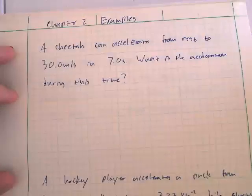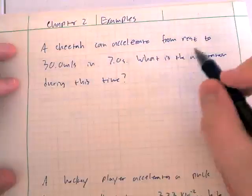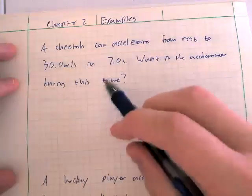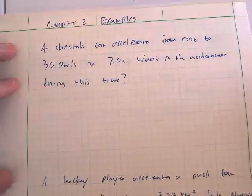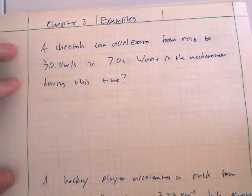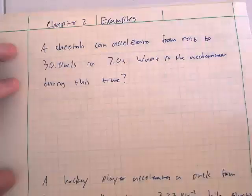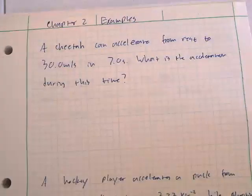This first one: a cheetah can accelerate from rest to 30 meters per second in seven seconds. It's a very simple question — we just want to know what is the acceleration during this time.